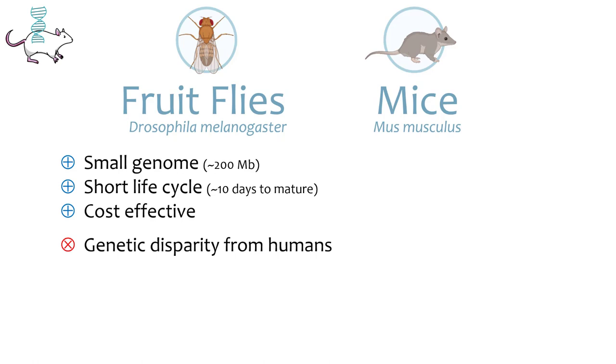However, insects and mammals are distantly related, increasing the likelihood of differences in gene function between flies and humans. This evolutionary distance may lead to different or even opposite behavioral effects compared to mammals with the same gene variant.